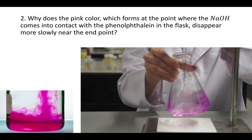Question 2 asks: why does the pink color, which forms at the point where the sodium hydroxide comes into contact with the phenolphthalein in the flask, disappear more slowly near the end point? Phenolphthalein only turns pink in a basic solution. You would think that all the liquid in that Erlenmeyer flask is homogenous, but of course it's not. When you first pour a little bit of sodium hydroxide into the flask, that part turns pink — that's where the base was just added.